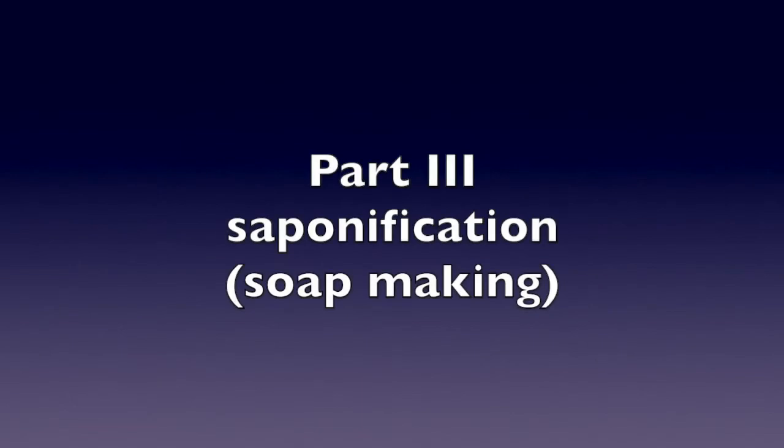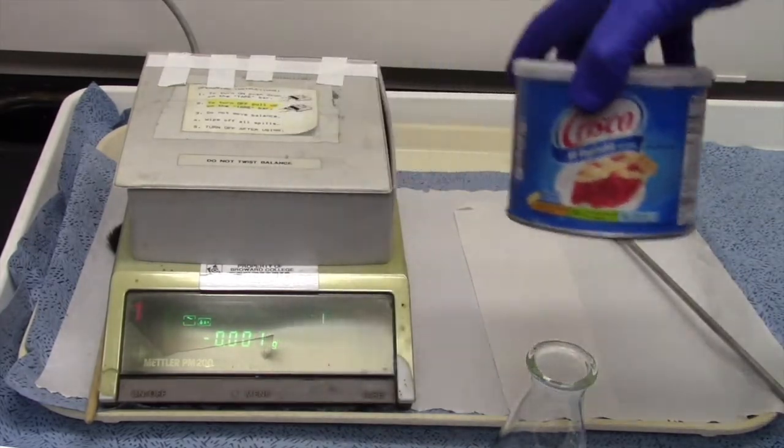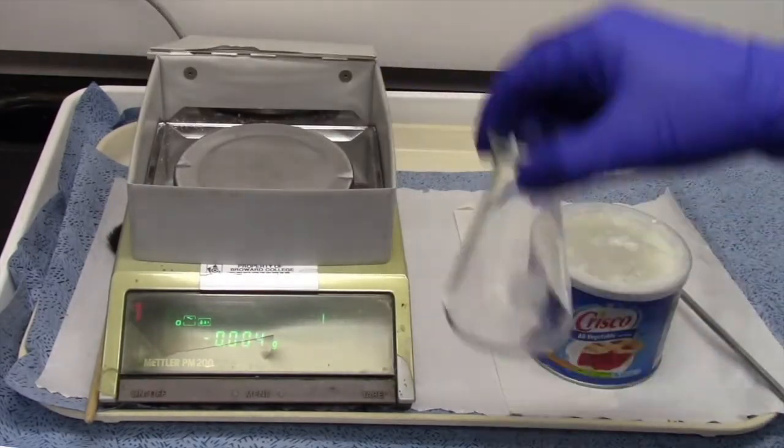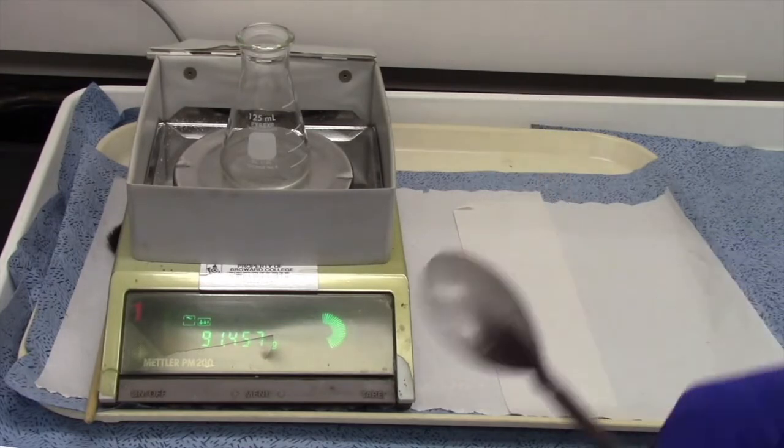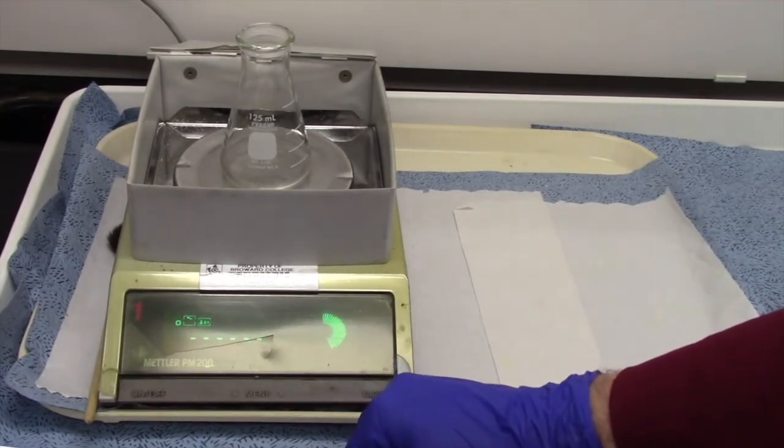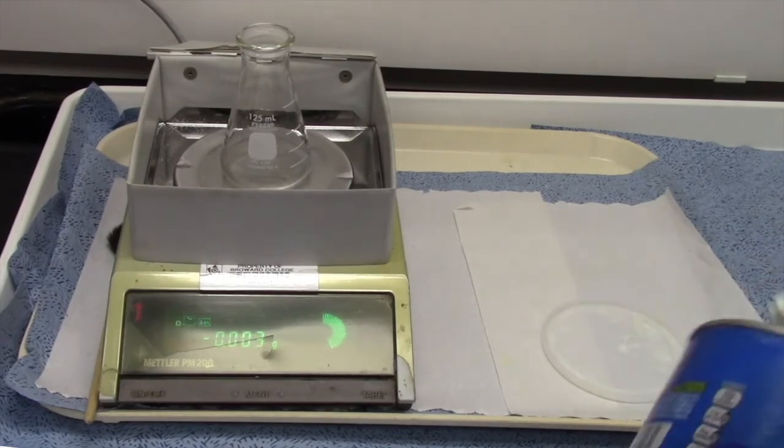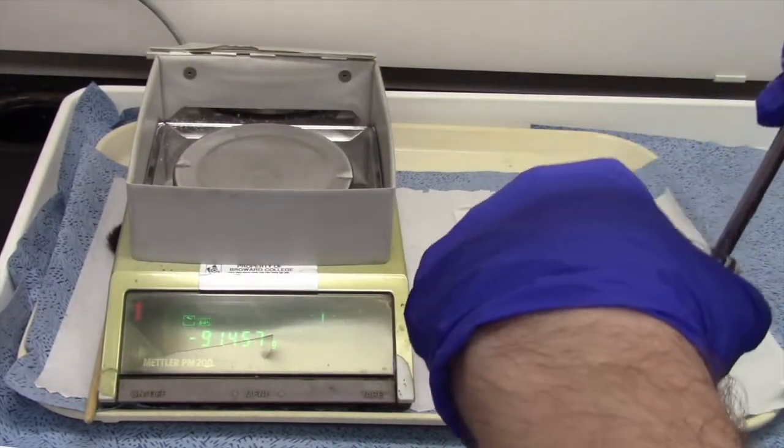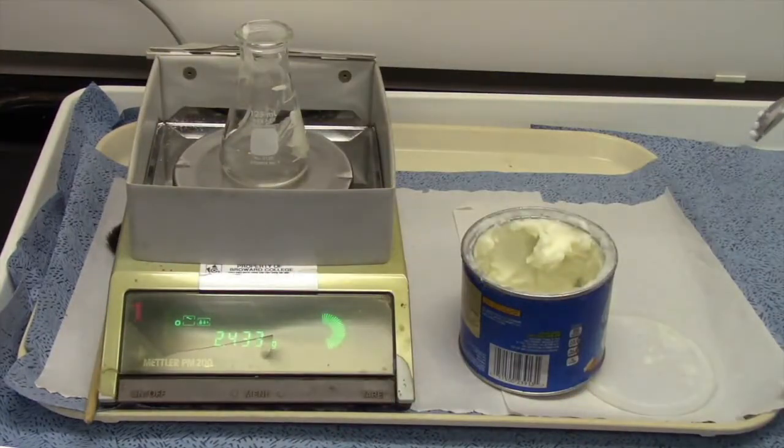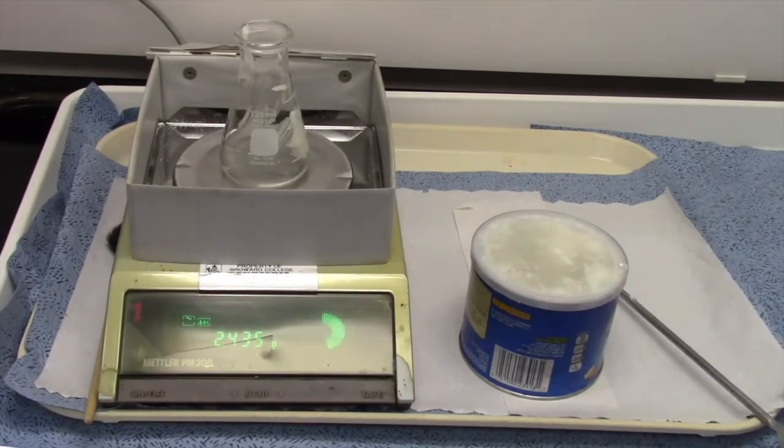Now we're going to weigh out 2.5 grams of this vegetable shortening, Crisco. You can buy that at any store here in Florida. I'm going to weigh directly into this Erlenmeyer flask because Crisco is really messy to work with. You're better off weighing directly into the flask. Two and a half grams doesn't take very much. 2.4, that's good enough. I'm very happy with that, so now we're going to move on to the next step.